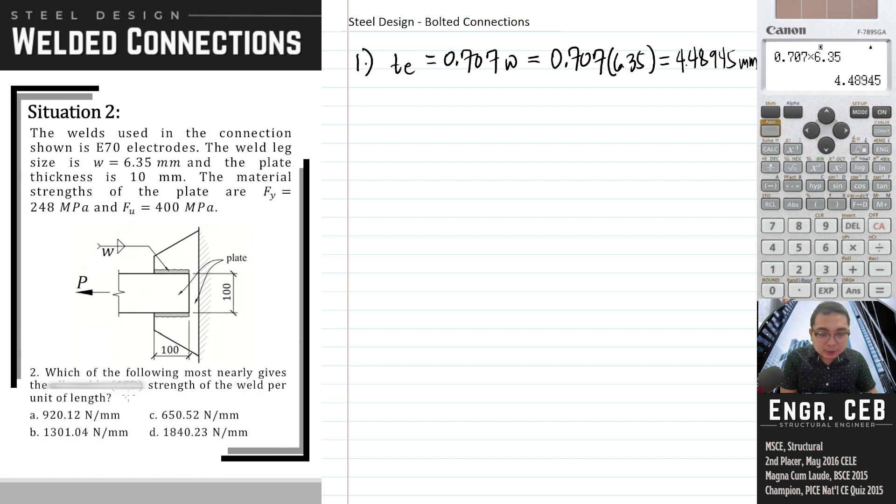Next, which of the following most nearly gives the allowable strength of the weld per unit of length? The nominal strength for the weld is fnw times awe. Fnw is the stress for the weld and awe is the area of the weld.